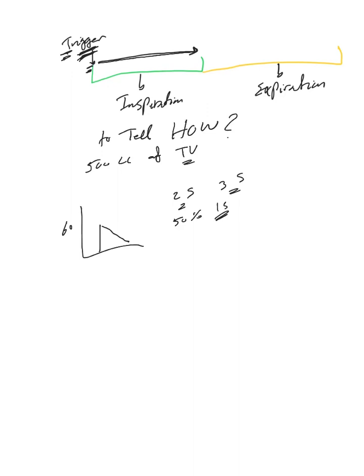The way we tell the ventilator how to deliver the breath is by setting a goal. We tell the ventilator, 'We set you this goal - please achieve it and maintain it during inspiration.'